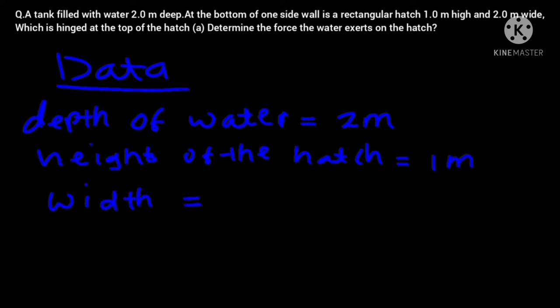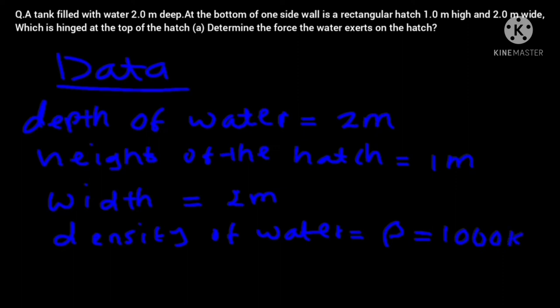Then the width, we've been given the width of the hatch which is equal to 2 meters. Then the density of water, we know very well that it's 1000 kg per meter cubed or 1 gram per centimeter cubed. Now we've been told to calculate the force the water exerts on the hatch so we don't have that, so force we don't have, so let's start by drawing a diagram.